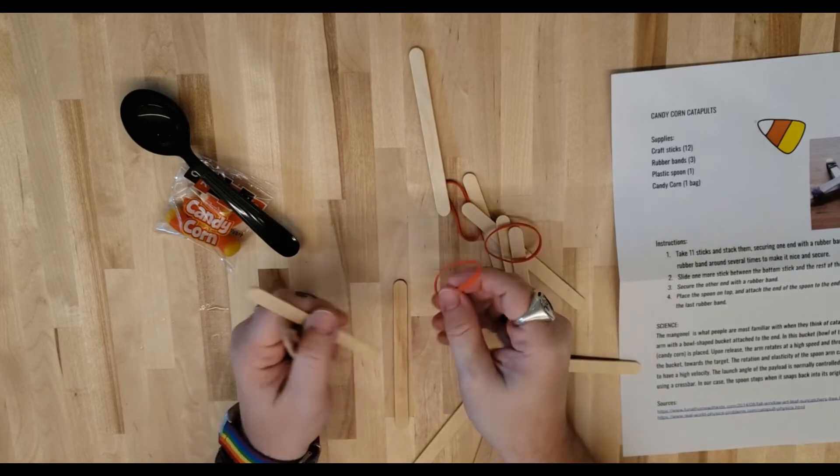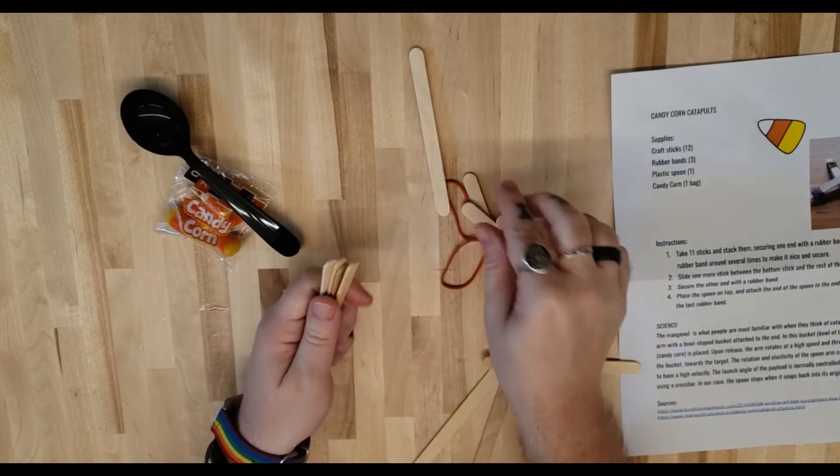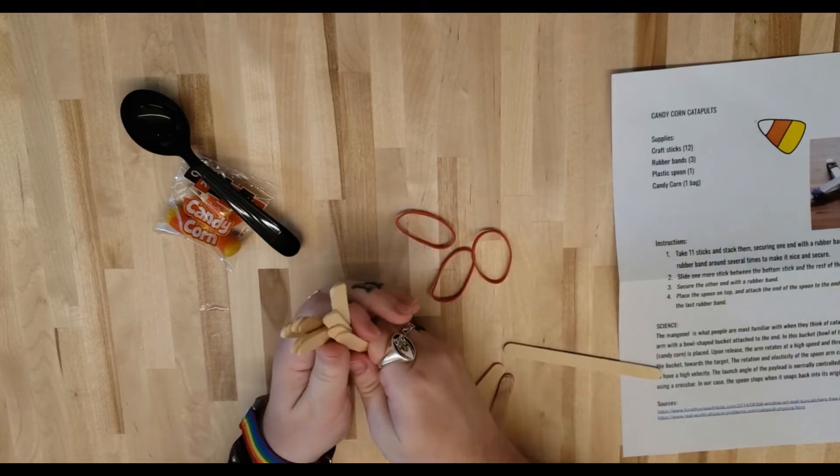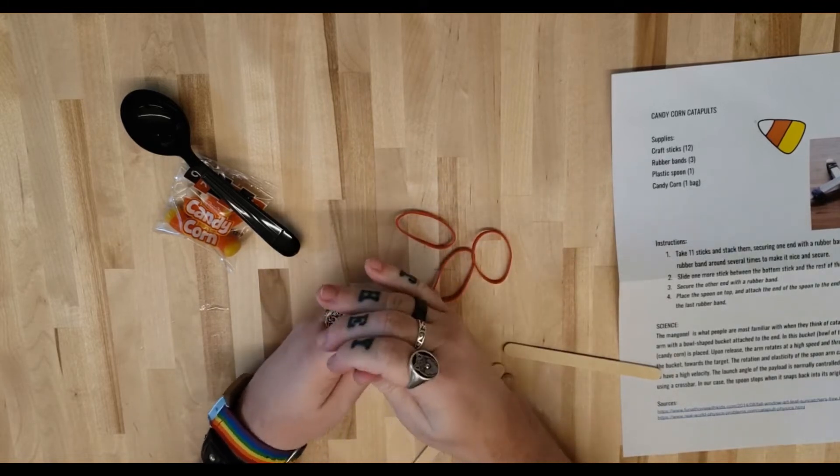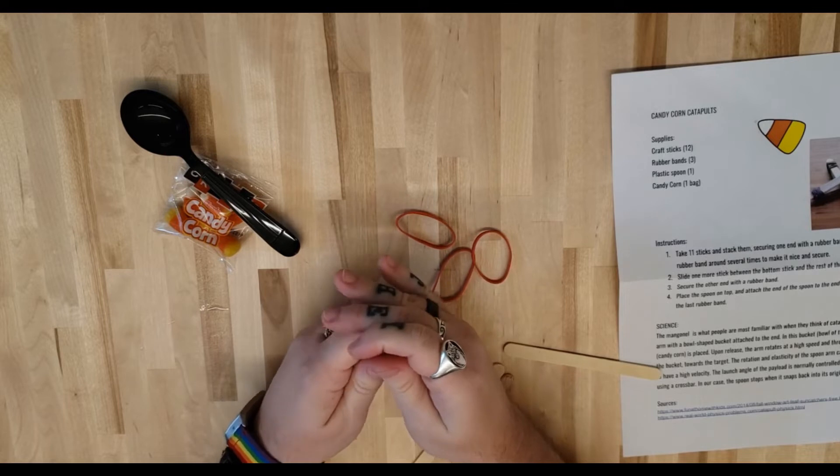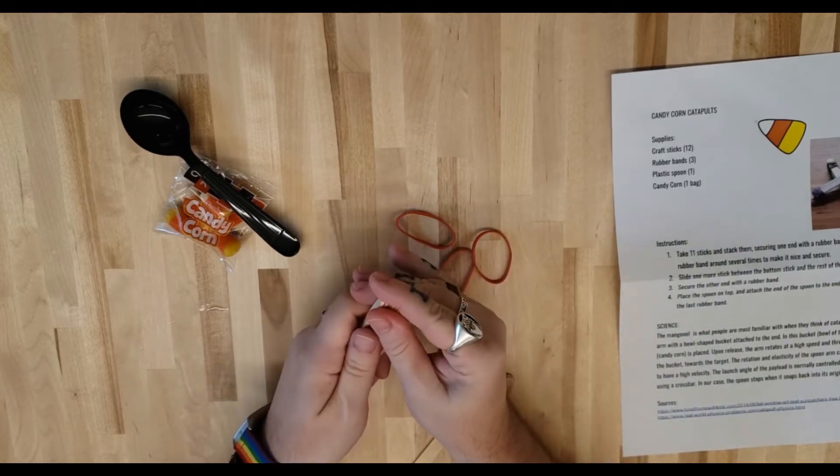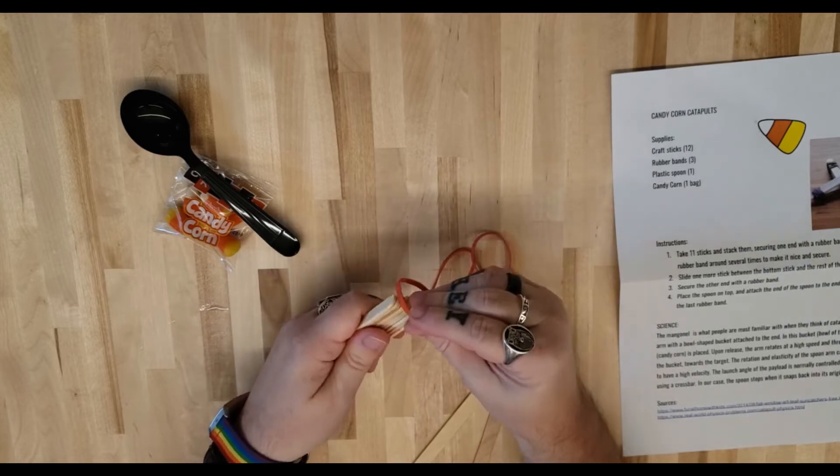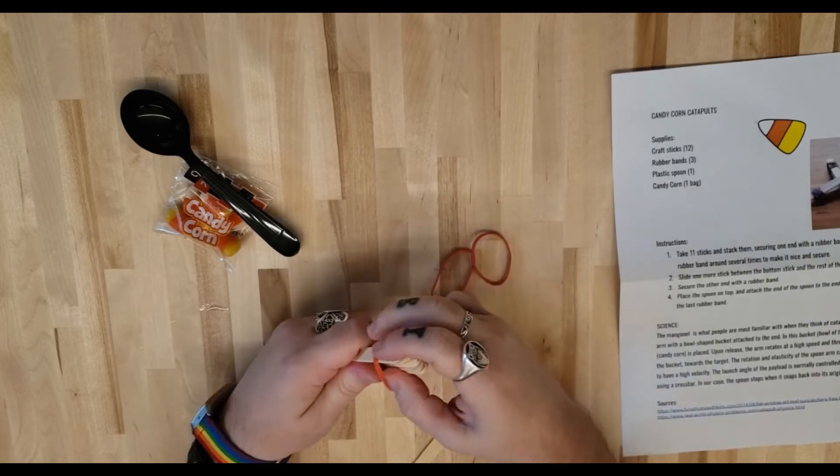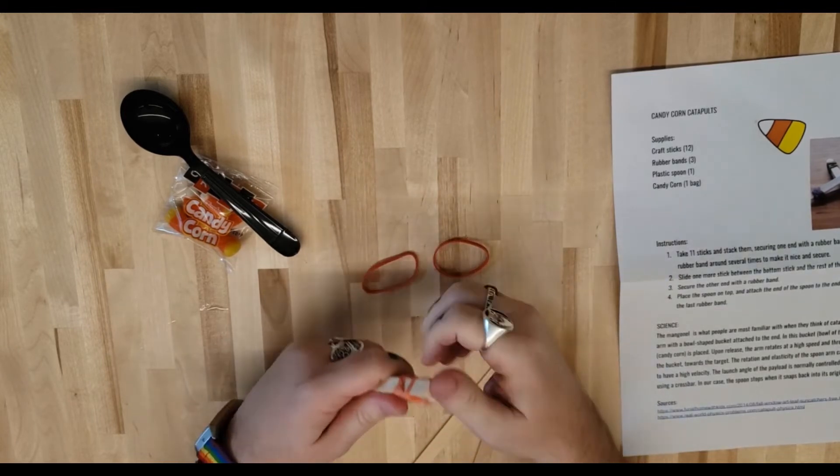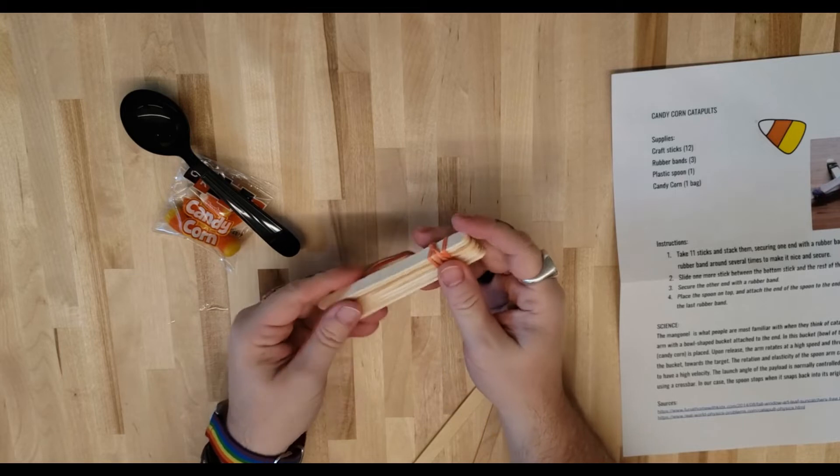All right, so first we're going to take 11 of our craft sticks here. We're going to stack them all up together. Then we're going to take a rubber band and we're going to wrap this around as many times as we need to to make sure it's good and secure. I think I'm going to do mine four times here.